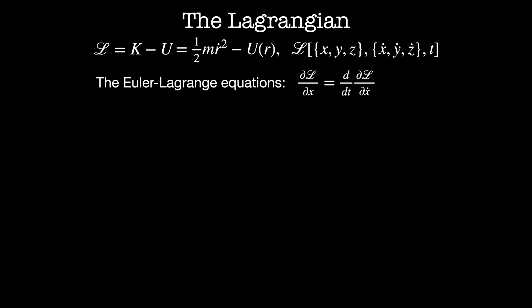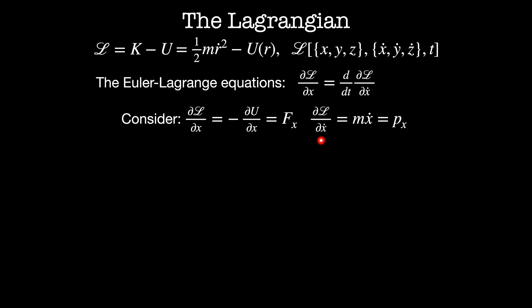The Euler-Lagrange equations are: dL by dx is equal to d by dt of dL by dx dot. The left half, dL by dx, is equal to minus dU by dx, because the kinetic energy is not an explicit function of position. We know that this is the force in the x direction by definition. On the right side, dL by dx dot is equal to mx dot, which is the momentum in the x direction. So the Euler-Lagrange equation is saying that force equals the rate of change of momentum.